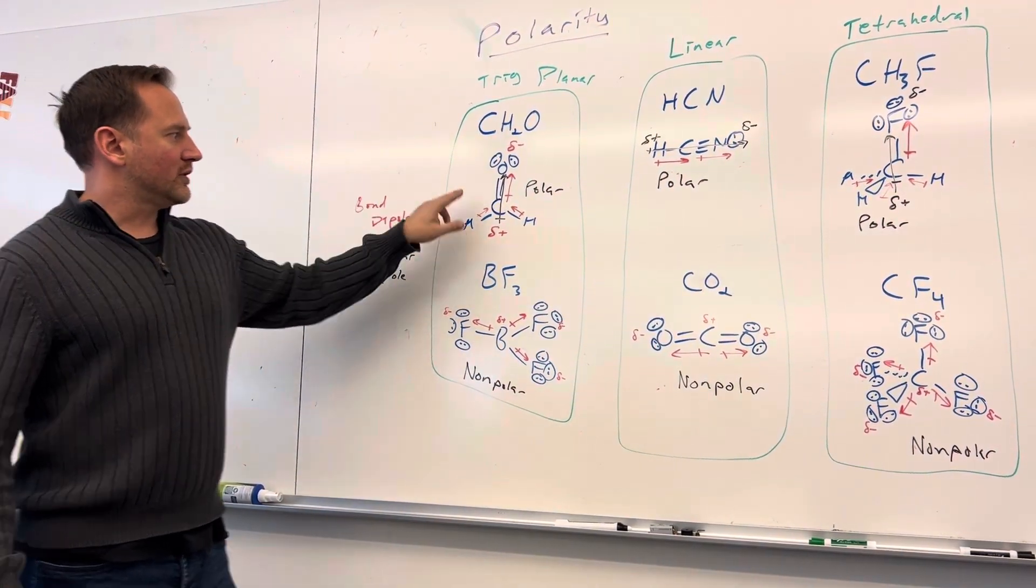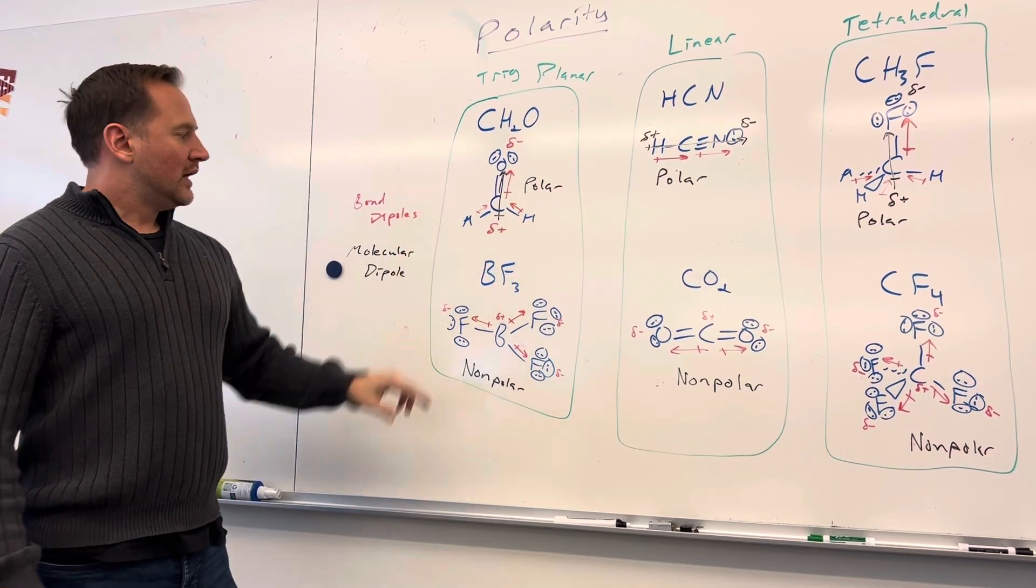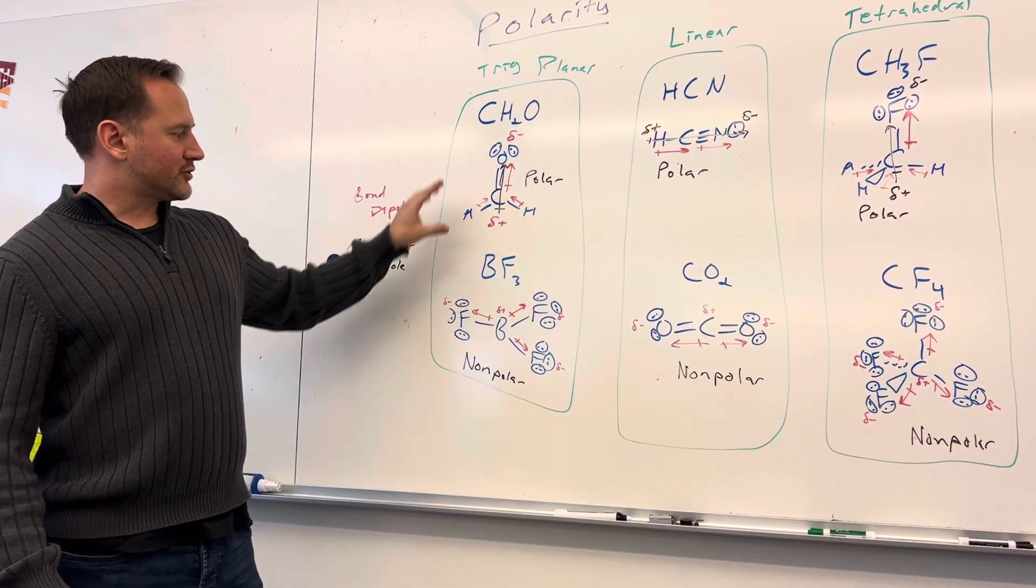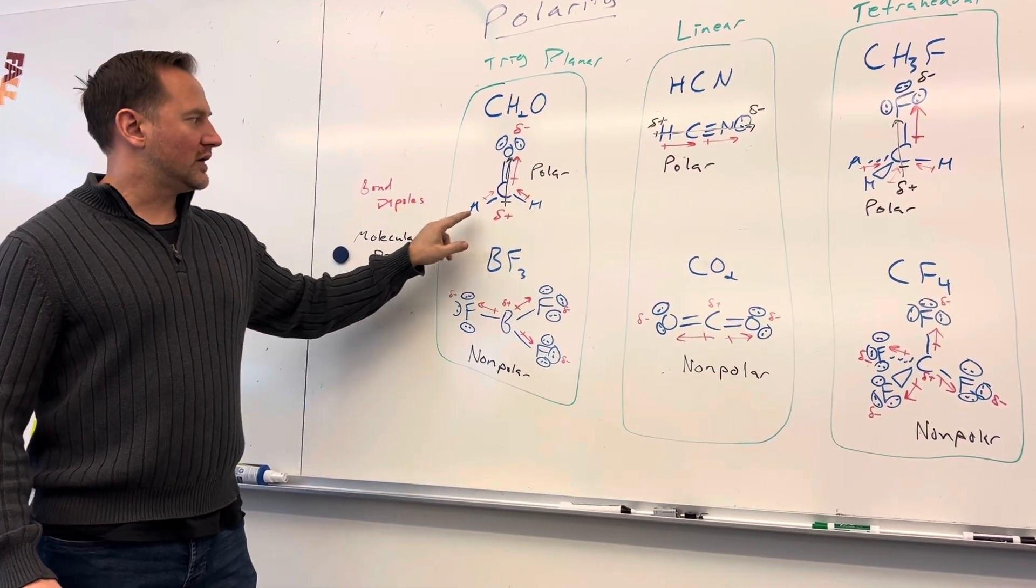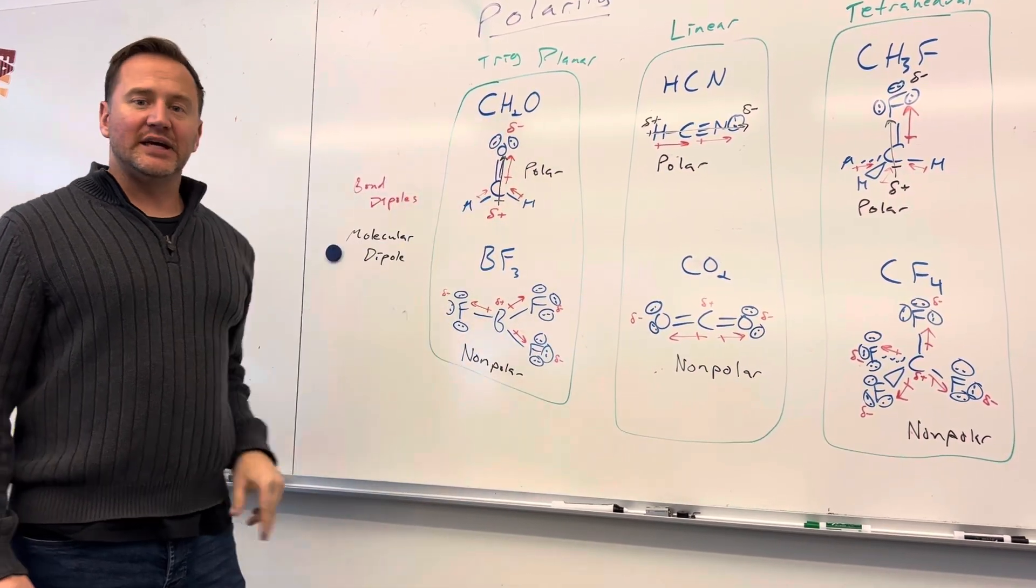So trigonal planar shapes have three atoms around the central atom, and they can either be symmetrical, like we see here with BF3, or they can be asymmetrical, like we have here with formaldehyde CH2O.